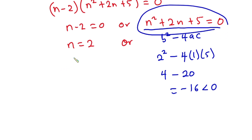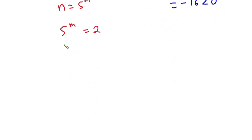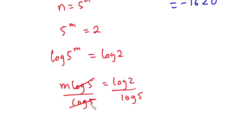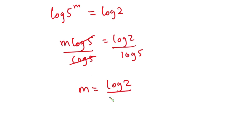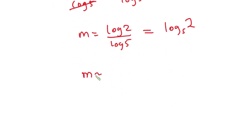So the value of n is 2. Remember, we let n equal 5 to the power m, so 5 to the power m equals 2. Taking log base 10 on both sides gives log of 5 to the power m equals log 2. Bringing m to the front: m times log 5 equals log 2. Dividing both sides by log 5, we get m equals log 2 over log 5, which is the same as log base 5 of 2.